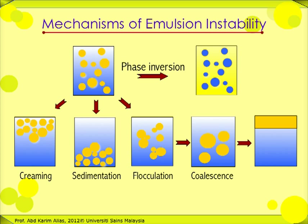Another type of emulsion destabilization is known as phase inversion. Creaming of an emulsion also increases the tendency of an emulsion to undergo phase inversion. Phase inversion occurs mainly in special cases when both the continuous and dispersed phases of an emulsion are liquid, as commonly found in dairy cream. It is common where the volume of the two fluid components is about the same, or the volume of the dispersed phase is larger than that of the continuous phase.